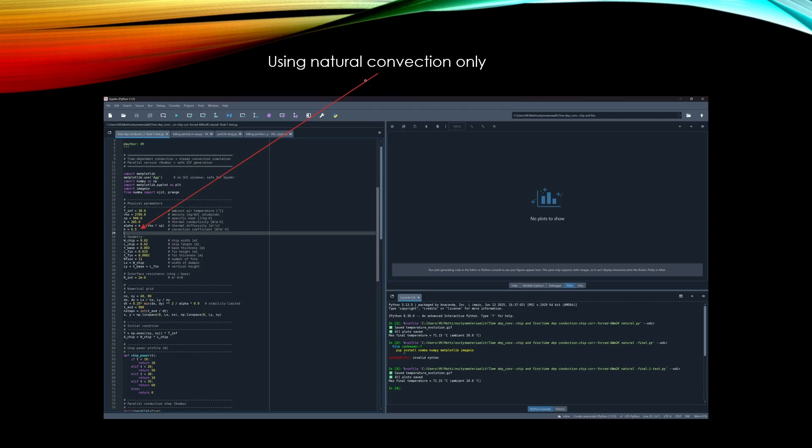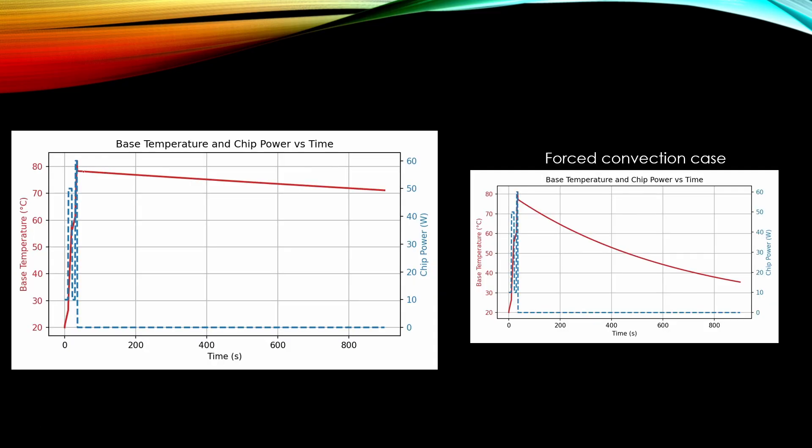Then I calculated the case for natural convection cooling. This H value was decreased to 6.5 watts per square meter Kelvin, which is a typical value for natural convection case. And from these results we see that if we have the same load profile, the temperature is increasing to almost 80 degrees C.